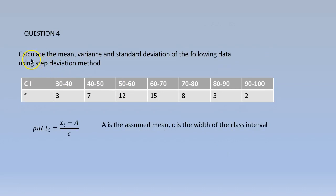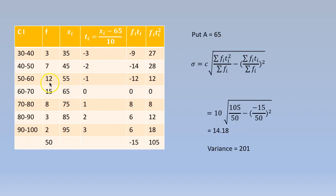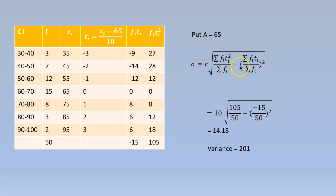Coming to the next problem: calculate the mean, variance, and standard deviation using the step deviation method. For this method, ti equals (xi minus a) divided by c, where a is the assumed mean and c is the width of the class interval. The middle values are 35, 45, 55, 65, and we take a as 65. So ti equals (xi minus 65) by 10: 35 minus 65 by 10 gives minus 3, 45 minus 65 by 10 gives minus 2, and so on. The formula is sigma equals c times the square root of (summation fi·ti squared by summation fi) minus (summation fi·ti by summation fi) squared.